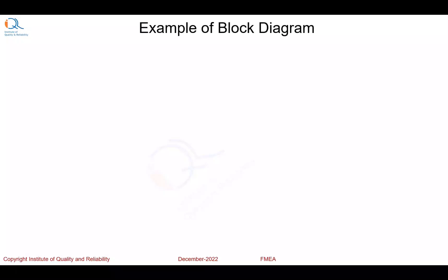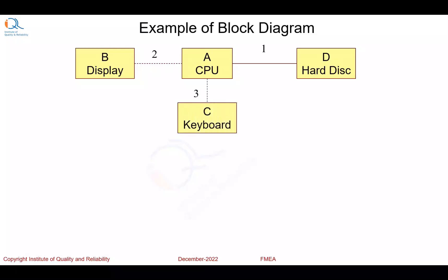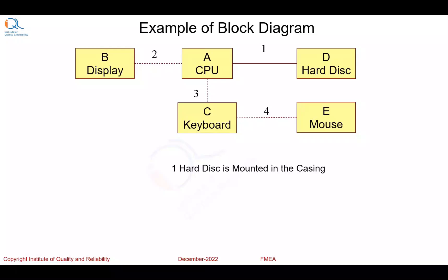Here is an example of a block diagram of a computer. A computer has a central processing unit, and the hard disk is physically mounted in the computer, shown by a solid line. We have the display unit connected through a wiring harness. Then we have a keyboard connected through a wiring harness, and the keyboard is also connected to a mouse through a wiring harness — or nowadays through Bluetooth or Wi-Fi. The harnesses connecting other units are shown as dotted lines.